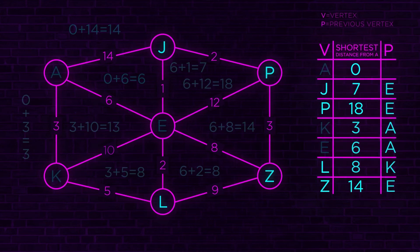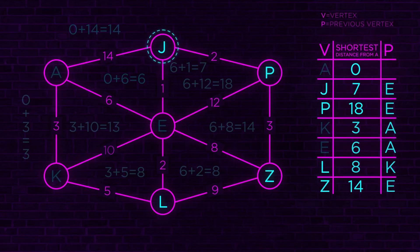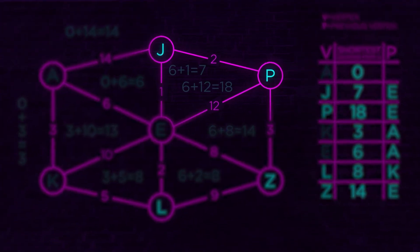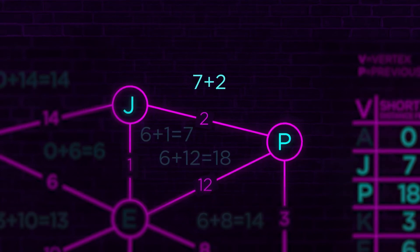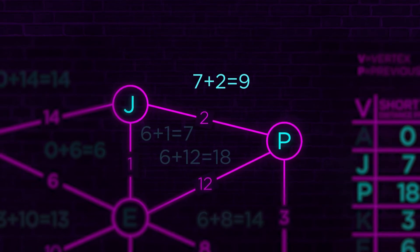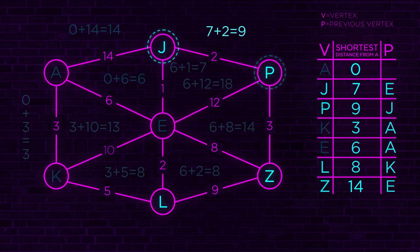Restart the algorithm: visit the unvisited vertex with the smallest known cost. Looking at the table, the next smallest is J at a cost of seven. Visit its unvisited neighbors — which is only P. J's cost is seven, plus two to get to P equals nine. Let's look at the table: P's previous cost was 18, now it's nine — so we update it to nine. The previous vertex for P is now J. There are no more unvisited neighbors, so we scratch out J.